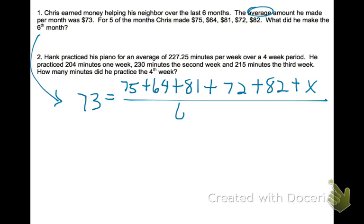And then we divide it by the total, which in this case is 6. Now we can solve this equation. The first thing I would do is multiply both sides by 6. On the right side, this 6 will divide out, and then 73 times 6 is 438.